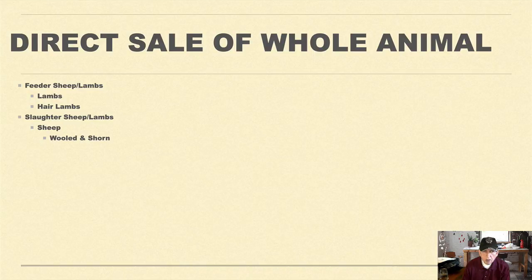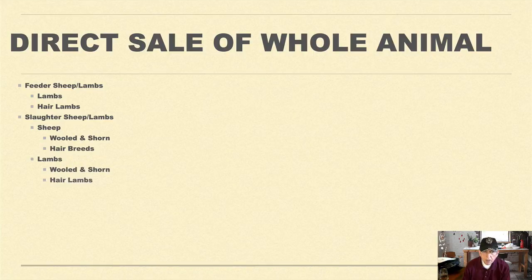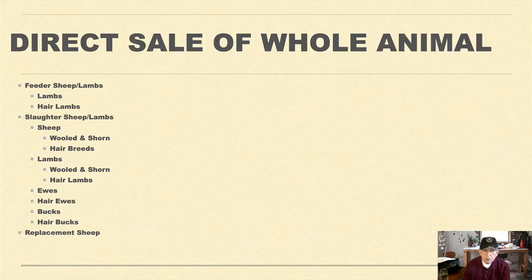Additional sheep types include: hair breed sheep, lambs, wool and shorn lambs, hair lambs, ewes, hair ewes, bucks, hair bucks, replacement sheep — ewes and bucks.